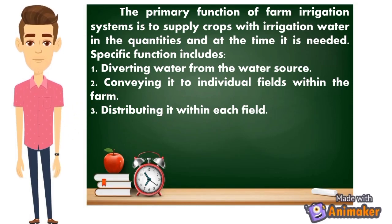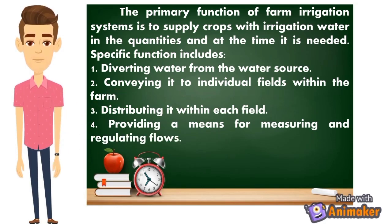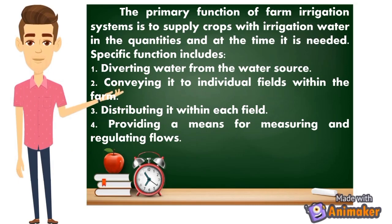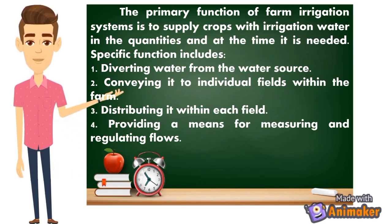At least magkaroon ng water or mairigate natin yung ating halaman. Ang tatlo, distributing it within each field. And number four, providing a means for measuring and regulating flows. We can regulate the flow of water sa irrigation system, kasi nakadepende rin sa atin kung paano natin kontrolin kung gaano karami yung tubig na ipapatubig sa ating mga halaman.